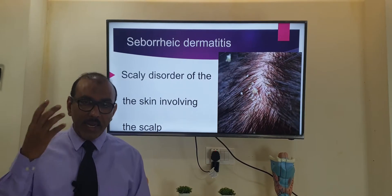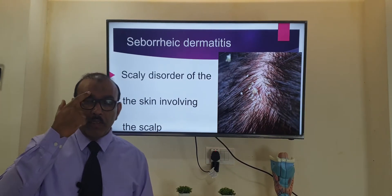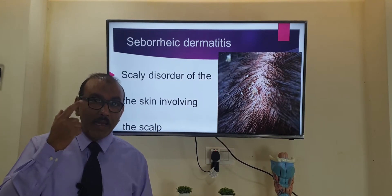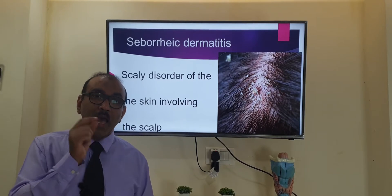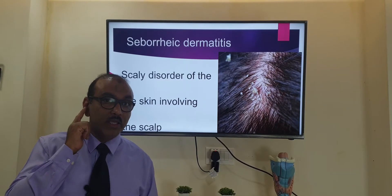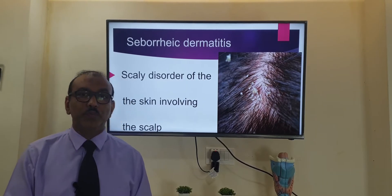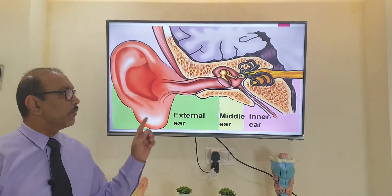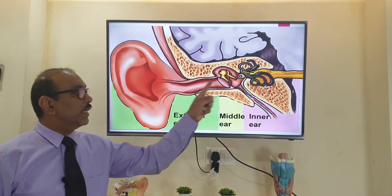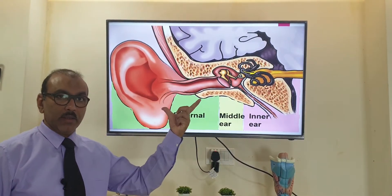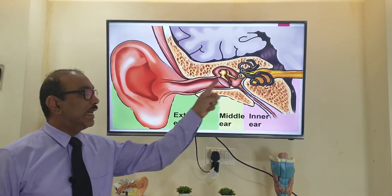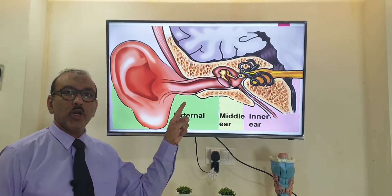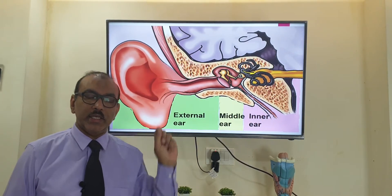In the head it involves the scalp, the eyebrows, eyelashes, nasal folds, and the ear also. In the ear, the external part is the skin-lined part, and infection of the external part is called otitis externa.